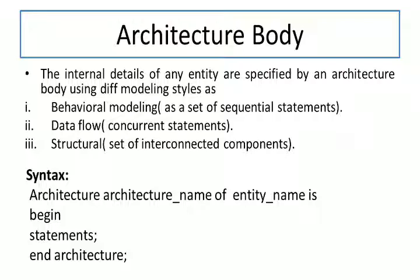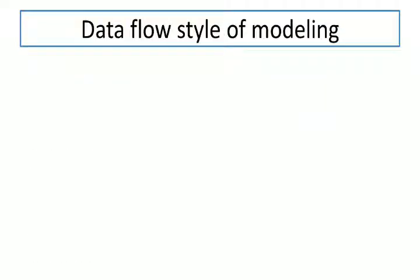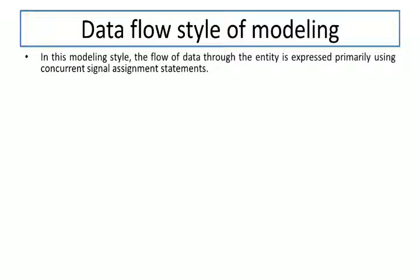The architecture name can be 'behavioral', 'data_flow', or 'structural', depending on which style of modeling you are using. Now for the first style — data flow — the name itself indicates there is a flow of data. This can be implemented using logical equations with concurrent statements. In this modeling style, the flow of data through the entity is expressed using concurrent signal assignment statements, where all statements execute in parallel and sequence does not matter.